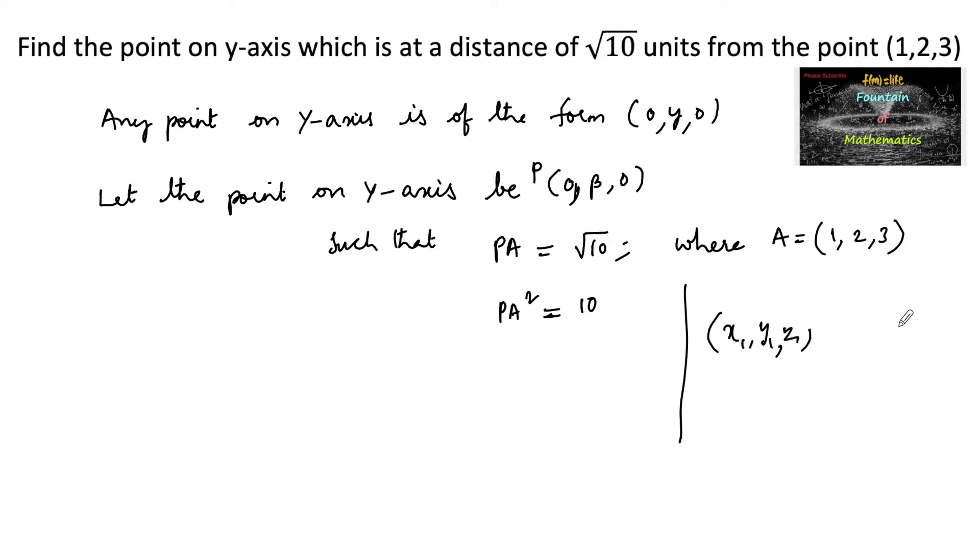x1, y1, z1 and x2, y2, z2. The distance between the two points, say this is P and Q, PQ is equal to square root of (x2 minus x1) whole square plus (y2 minus y1) whole square plus (z2 minus z1) whole square.